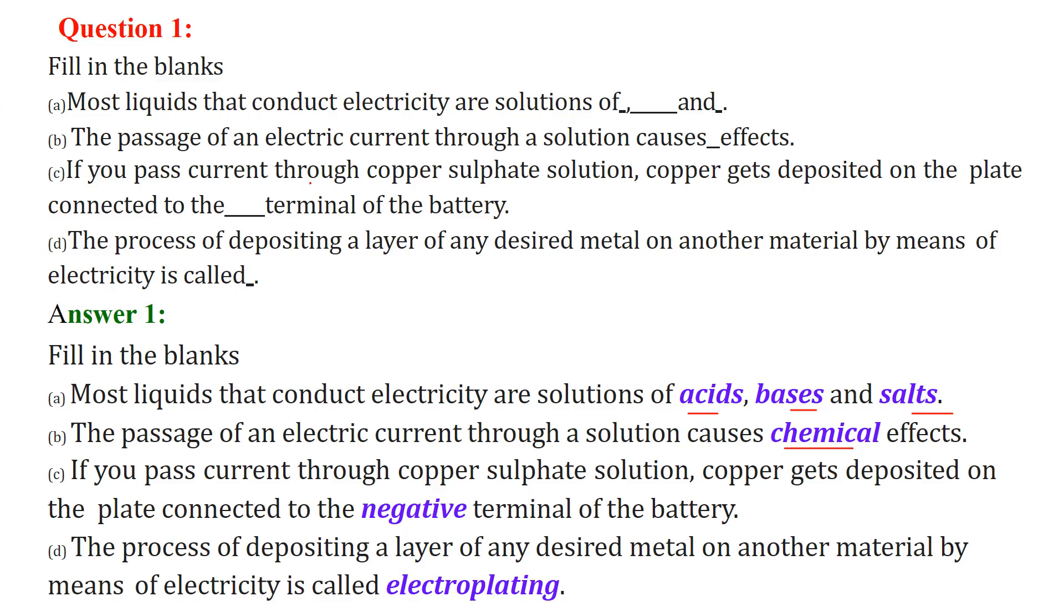If you pass current through copper sulphate solution, that is CuSO4, copper gets deposited on the plate connected to the negative terminal of the battery.